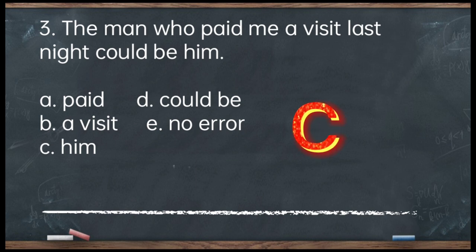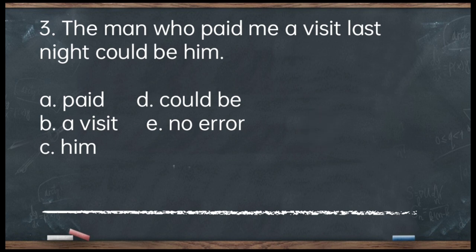The answer is letter C — 'him.' This is somewhat confusing because if you try to read the sentence, it seems correct. However, the pronoun referent is erroneous — 'him' is not a subject pronoun. The man is a subject, so it should be a subject pronoun. It should be 'he.' The corrected sentence: The man who paid me a visit last night could be he. To verify, substitute 'the man' with 'he': he paid me a visit last night.